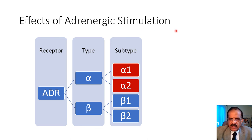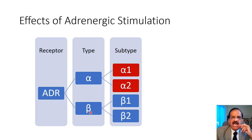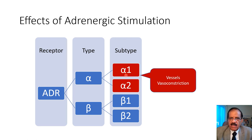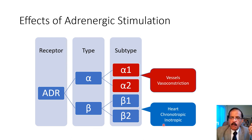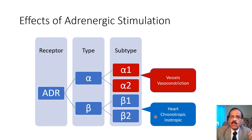Now let's look at the effects of adrenergic stimulation to understand beta blockers. Adrenergic receptors are of two types — alpha and beta — with subtypes alpha-1, alpha-2, beta-1, and beta-2. Alpha receptors are predominantly vasoconstrictors: alpha-1 in peripheral vessels is a vasoconstrictor, so using an alpha blocker lowers blood pressure. Beta receptors are on the heart and have chronotropic and inotropic effects — increasing heart rate and force of contraction. By giving beta blockers we reduce chronotropy and inotropy, reduce cardiac output, and lower blood pressure.